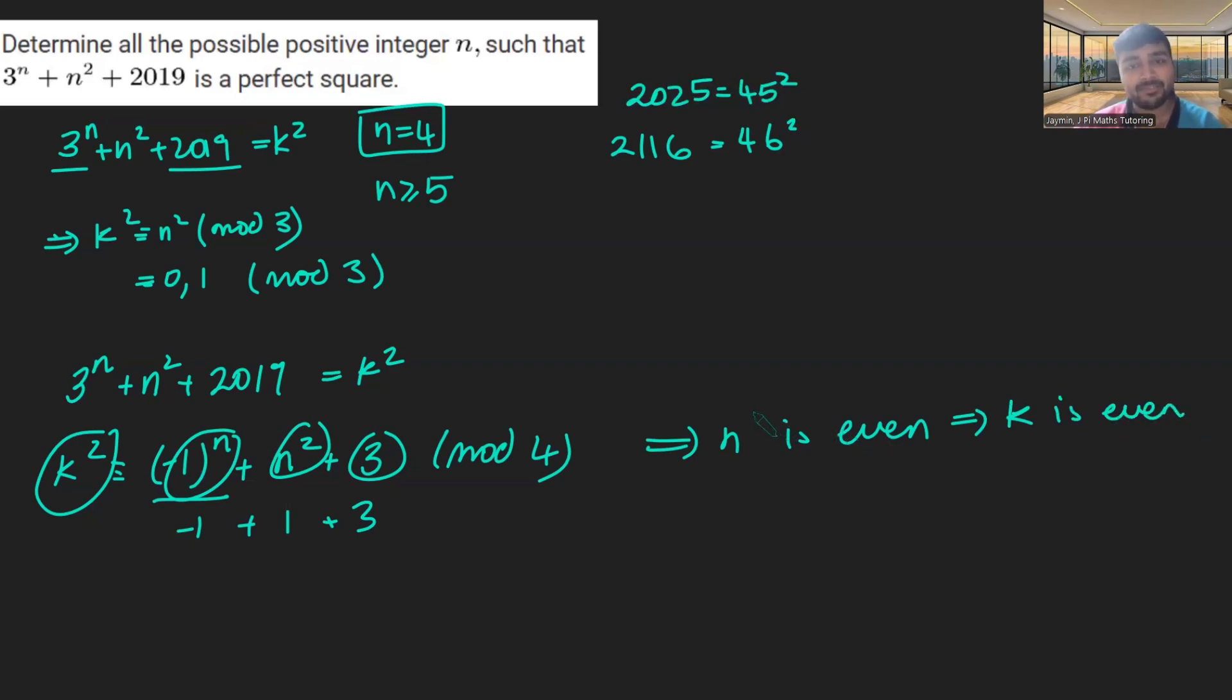So n and k are even numbers. We're going to focus on the fact that n is even, though. And we're going to come back up to this expression 3 to the n plus n squared plus 2019. And what we're going to do is show that for sufficiently large n, this number is sandwiched between two consecutive squares.